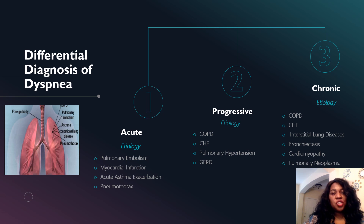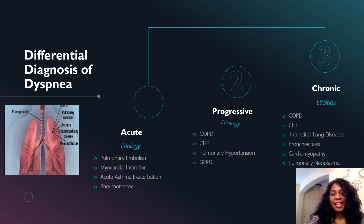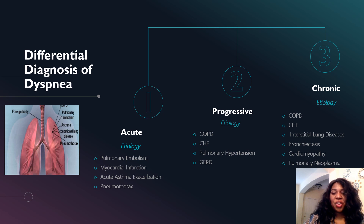The differential diagnosis of dyspnea: when your patient presents with dyspnea in a clinical setting, the first thing you should think about is whether it's acute, progressive, or chronic. Under acute etiology: pulmonary embolism, myocardial infarction, acute asthma exacerbation, and pneumothorax. Under progressive symptoms, etiology includes COPD, CHF, pulmonary hypertension, and GERD.